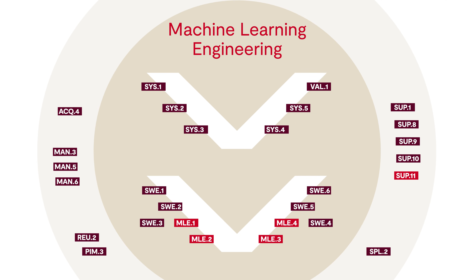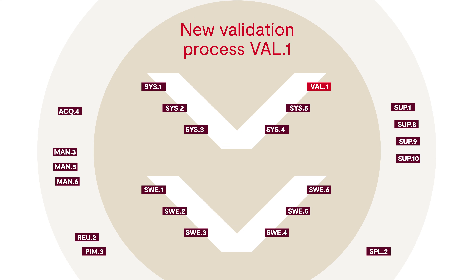Second, the development of software by machine learning. Machine learning-specific processes replace part of the software engineering processes. To ensure that the interaction of all mechatronic disciplines ultimately results in a compelling product, there is also a new validation process. This checks whether the stakeholder requirements are actually met.